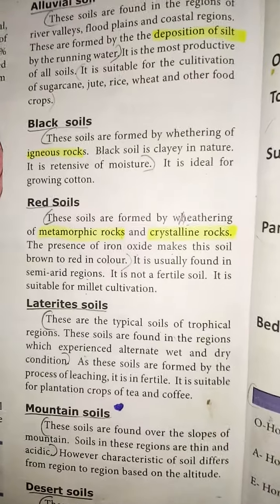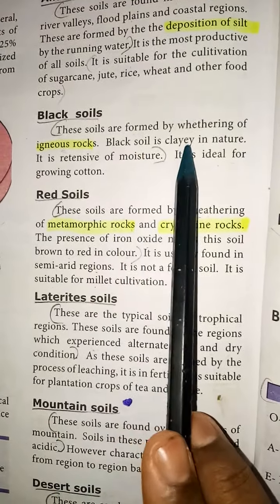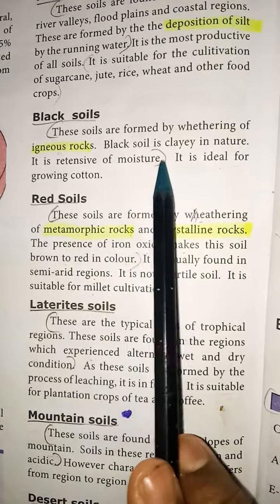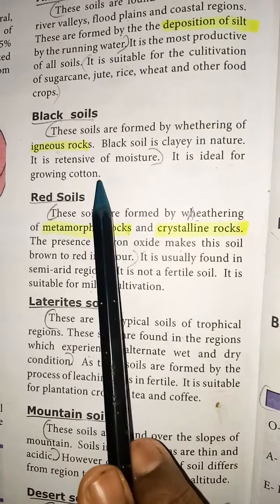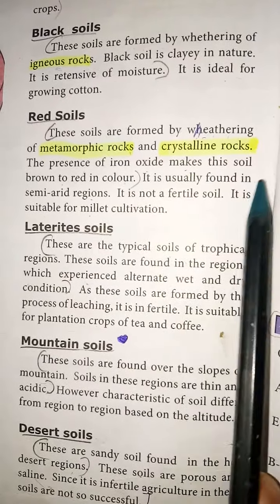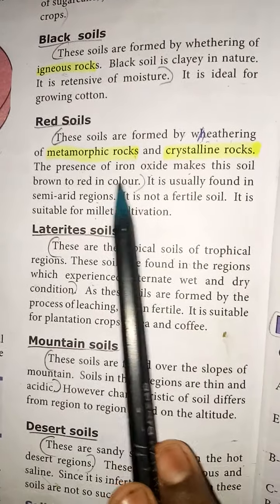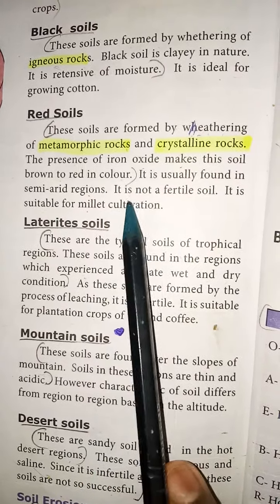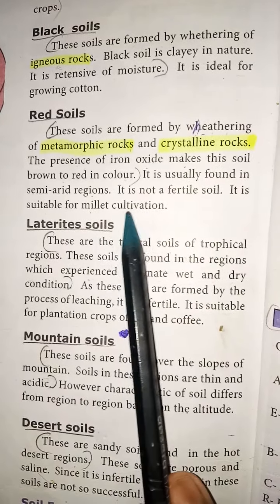Black soil: these soils are formed by weathering of igneous rocks. Black soil is clayey in nature and retentive of moisture — it holds water — and is ideal for growing cotton. Red soil: these soils are formed by weathering of metamorphic and crystalline rocks. The presence of iron oxide makes this soil brown to red in color. It is not a fertile soil and is suitable for millet cultivation.